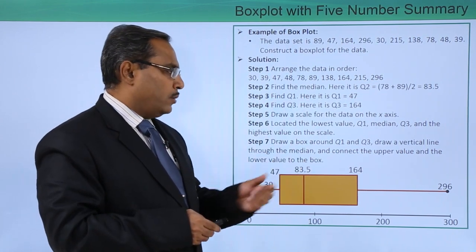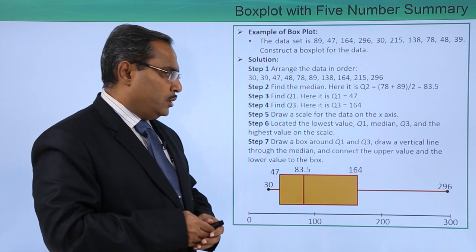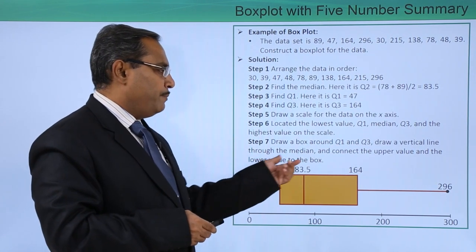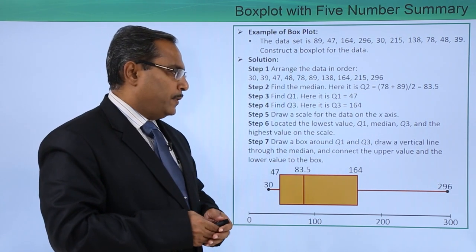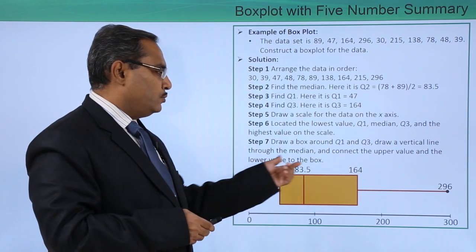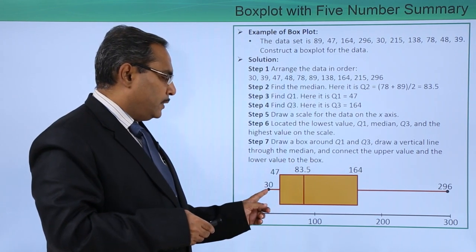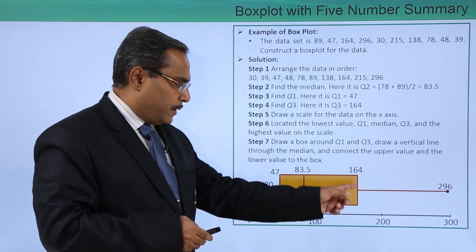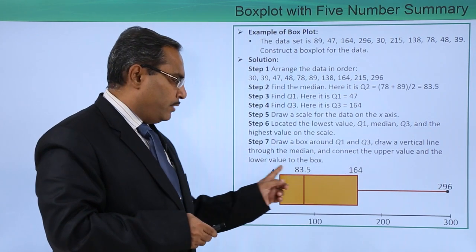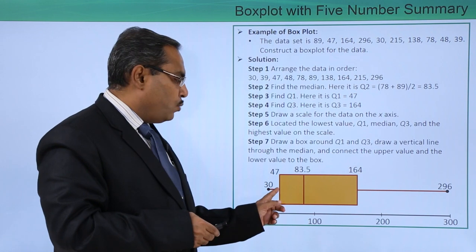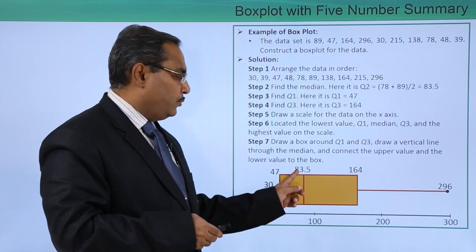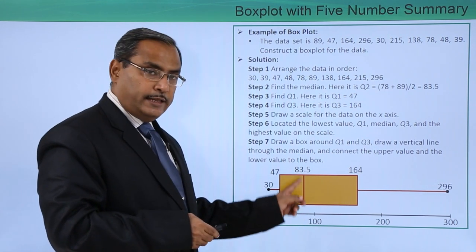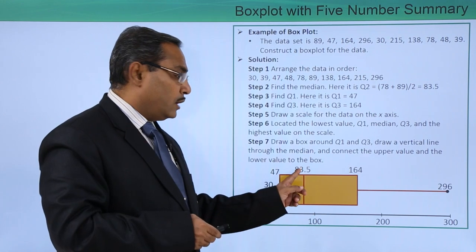Draw a box around Q1 and Q3. Draw a vertical line through the median and connect the upper value and the lower value to the box. Here we are connecting the lower value to the box and upper value to the box. And here we are drawing one box from Q1 to Q3, and we are drawing one vertical line across this box for our Q2.